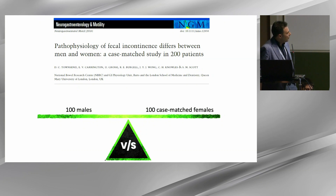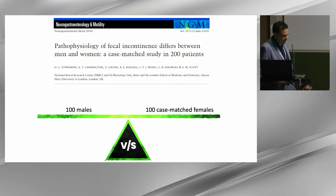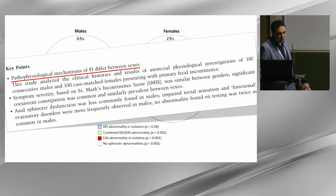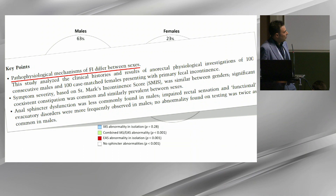We tried to answer this question a few years ago, making a case-matched study of 200 patients — evaluating 100 males compared to a cohort of age-matched females. What we found was that about one-fourth of females had a normal sphincter, as compared to more than 60% of males. This let us conclude that the pathophysiology mechanism behind fecal incontinence differed between sexes — anal sphincter dysfunction was less commonly found in males, who instead presented with impaired rectal sensation and functional evacuatory disorders.